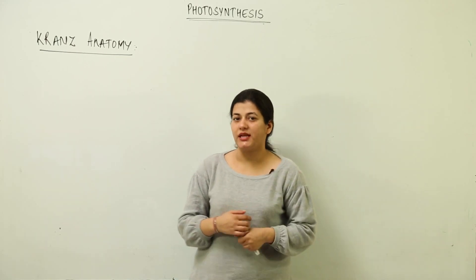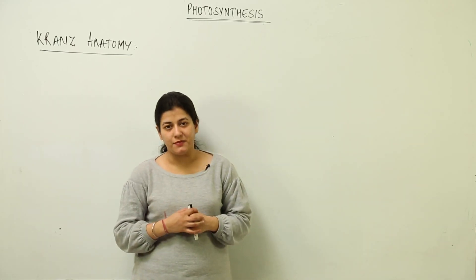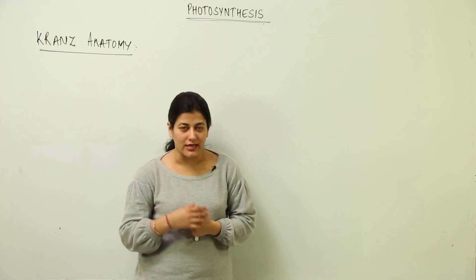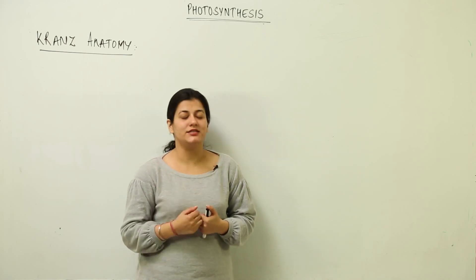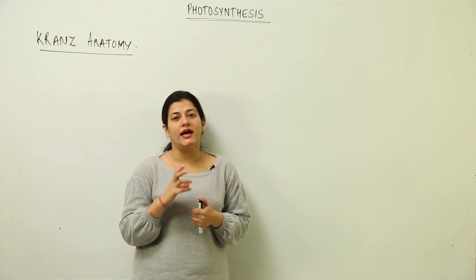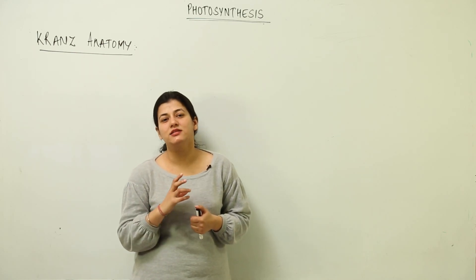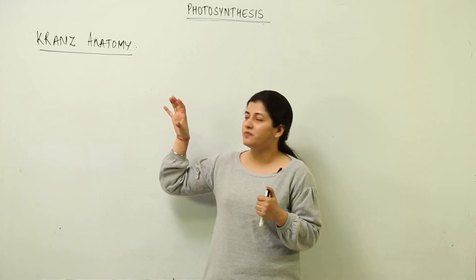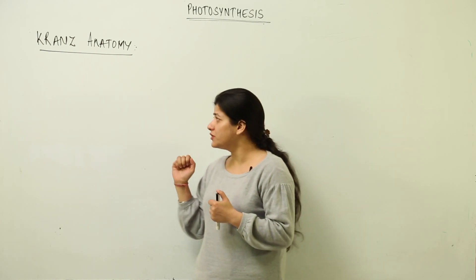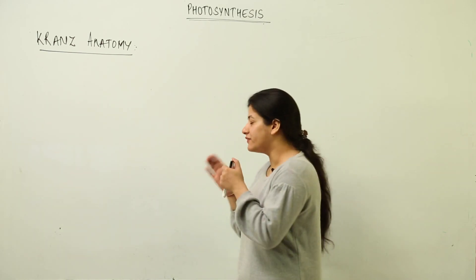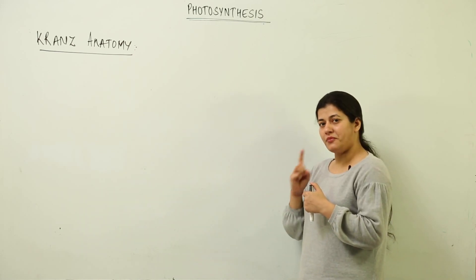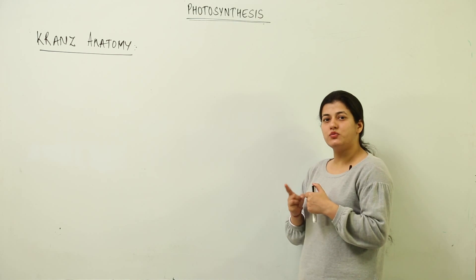We have to start with another type of cycle adopted by plants for carrying out photosynthesis — the C4 type of cycle. Before we go to that, we need to understand a term: Kranz anatomy. As the name suggests, this involves an anatomical difference in the leaf. We have discussed various cycles involved in photosynthesis, and one primary cycle we discussed was the C3 cycle.